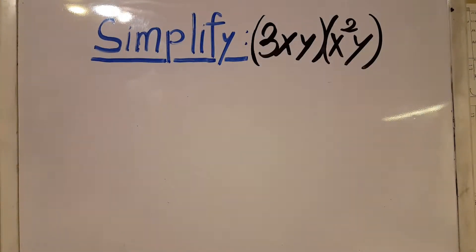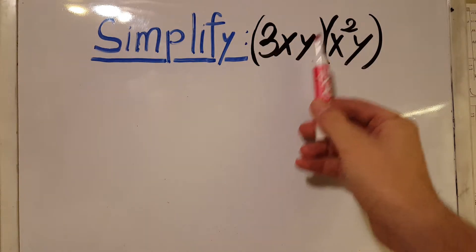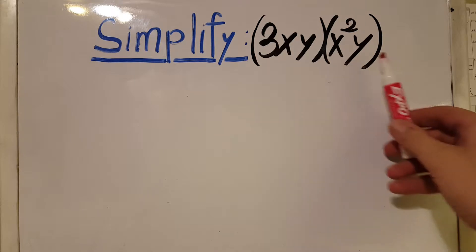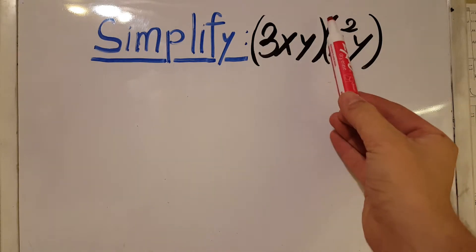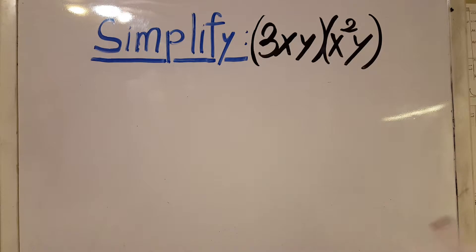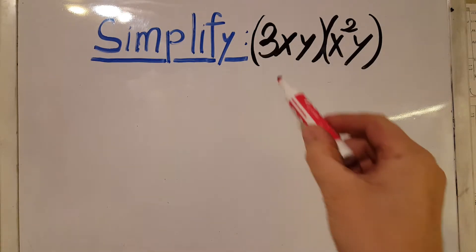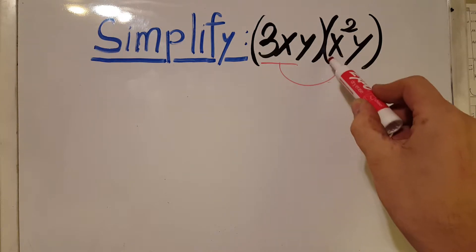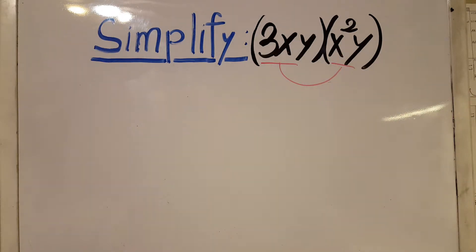Okay, in this problem they want us to simplify the expression. We have 3xy in a parenthesis times x squared y in another parenthesis. We have multiplication between them, so we're going to go ahead and use the distributive property and take this term and multiply it into this term.